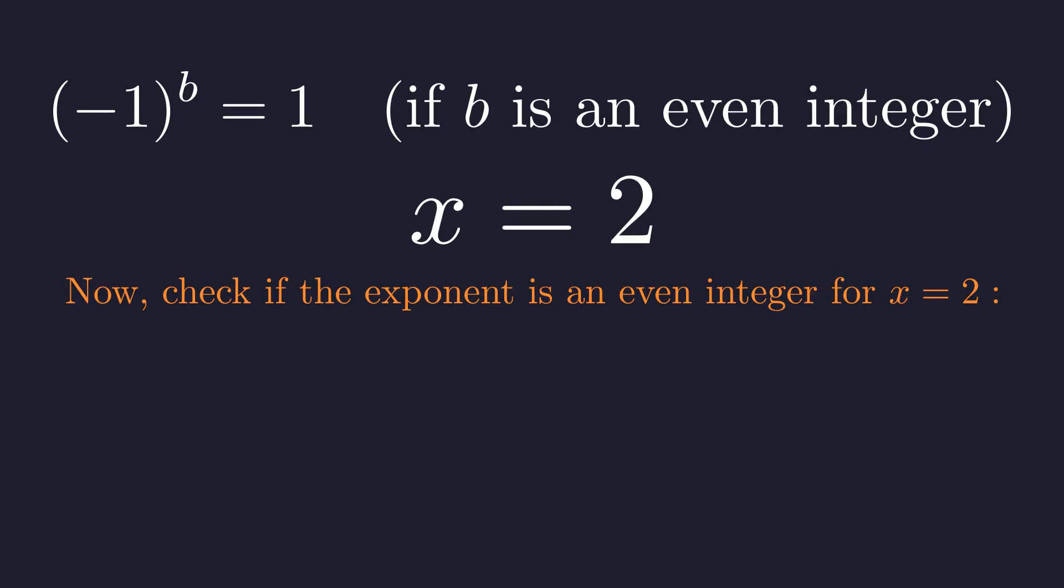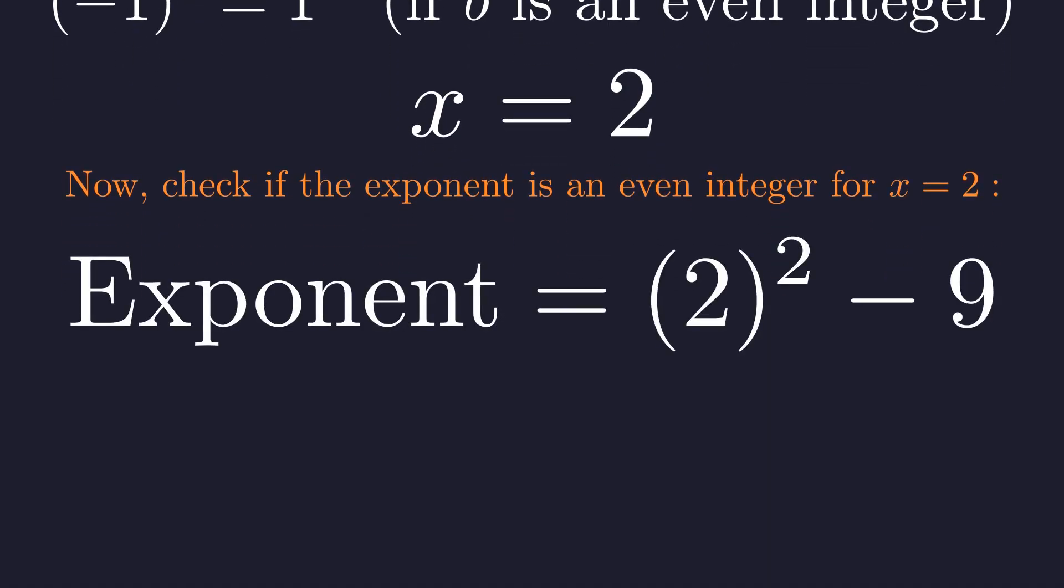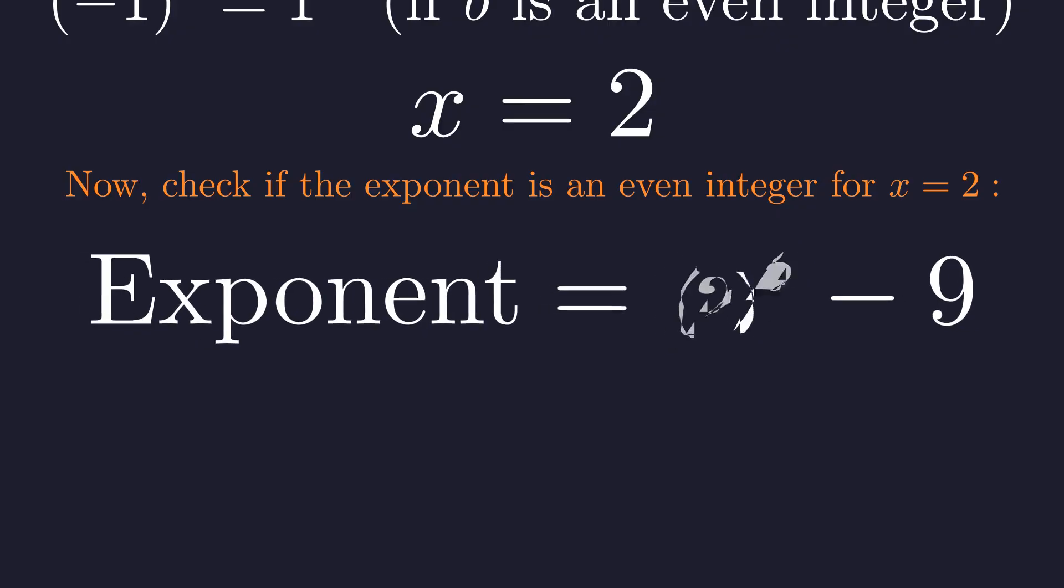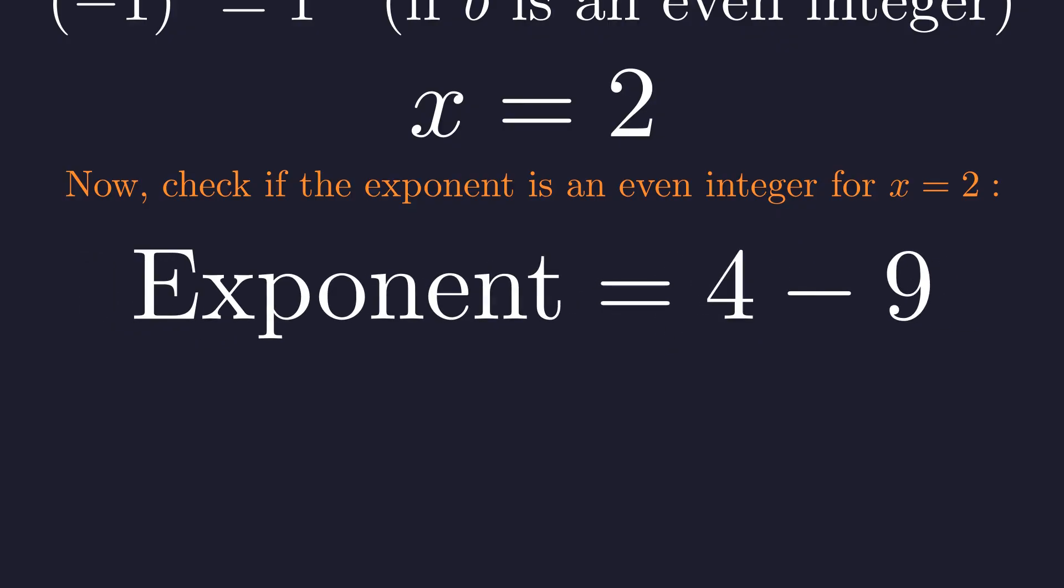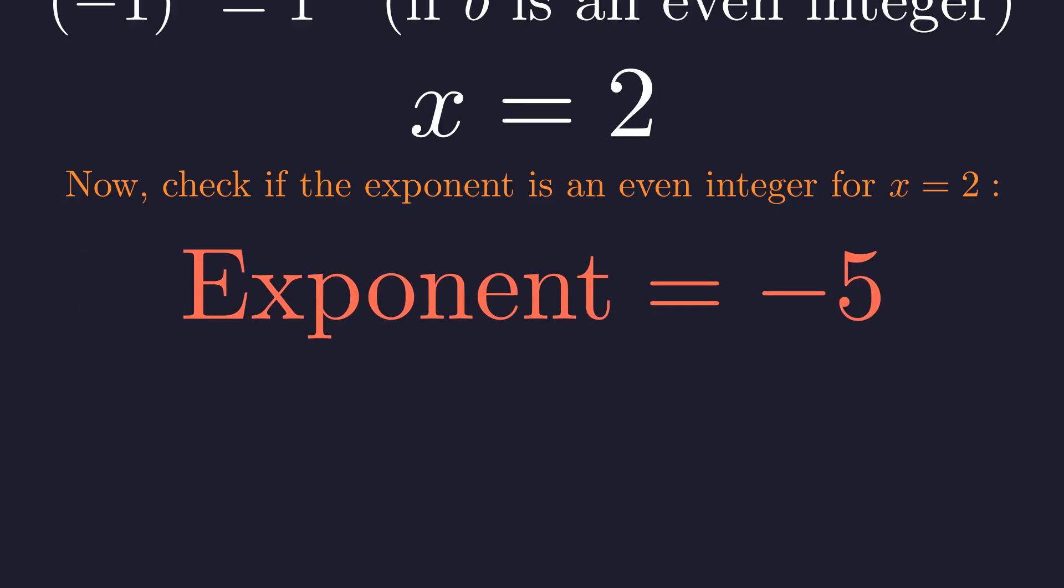Now, for the crucial check, we must evaluate the exponent x squared minus 9 at x equals 2. Substituting 2 into the expression, 2 squared is 4, and 4 minus 9 is negative 5.